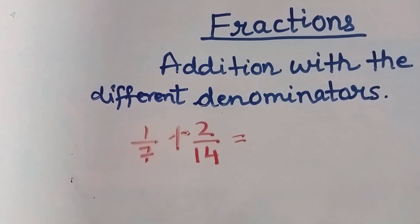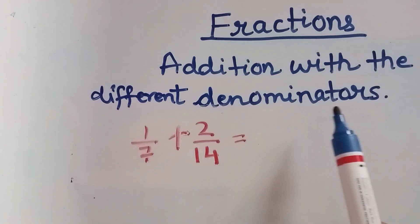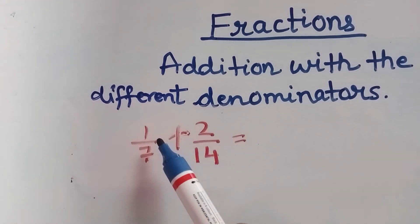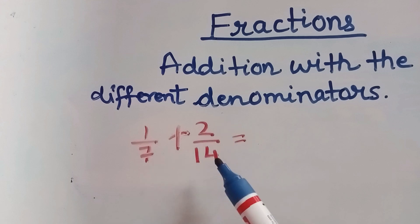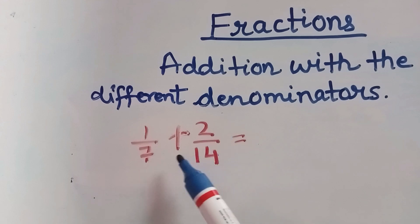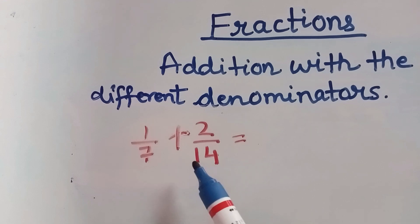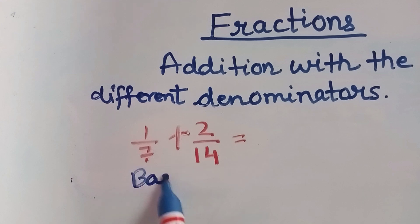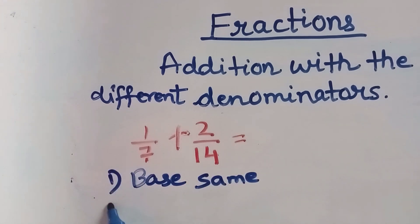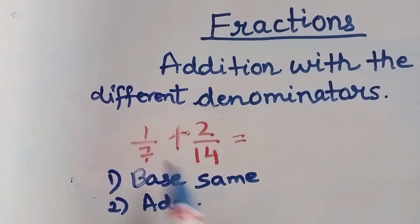Let us take another example where we have to do the addition of fractions with different denominators. Here it is 1 by 7 plus 2 by 14. First we have to make the base same in both the fractions and then we will add them. This is the first step, and second we have to add.